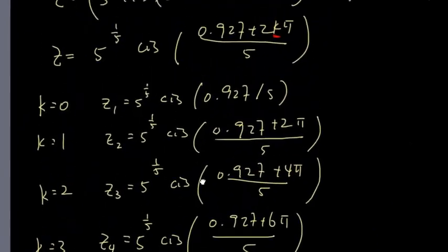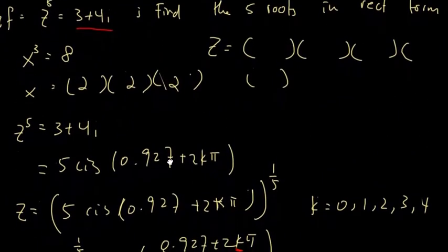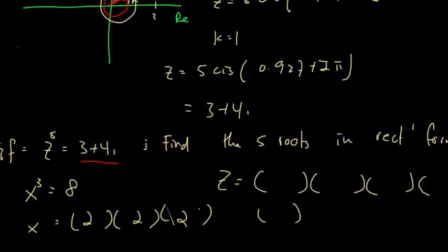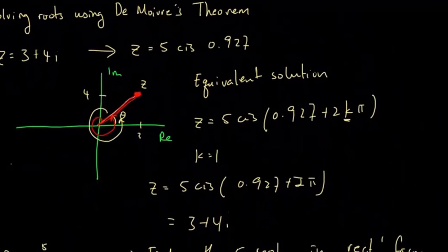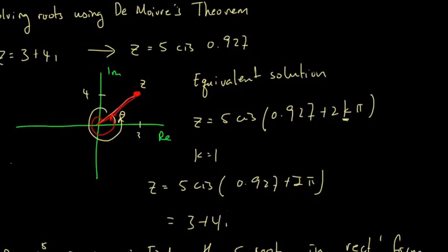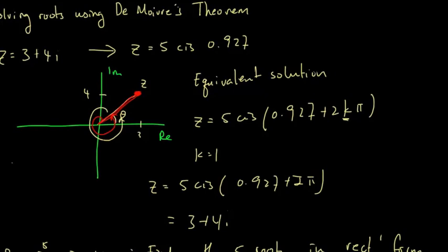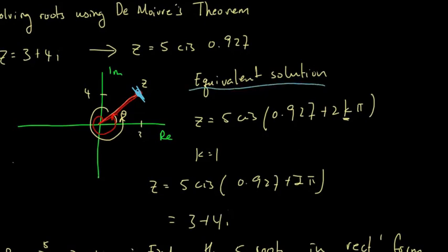Let me recap the procedure from the beginning. The reason we use equivalent solutions is that once we convert a complex number from rectangular to polar form, each rotation of 2π gives exactly the same z value. So we express the polar form with the equivalent solution by adding 2kπ, where k is the number of rotations.